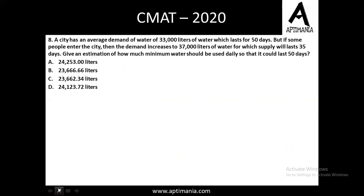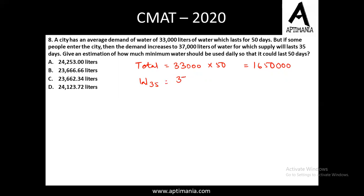Question number 8 is again from averages. A city has an average demand of 33,000 liters of water per day which lasts for 50 days. So total water availability is 33,000 × 50 = 1,650,000 liters. Now if some people enter the city, the demand increases to 37,000 liters per day for 35 days — meaning those people will be staying in the city for 35 days. Water consumption for those 35 days will be 37,000 × 35 = 1,295,000 liters.